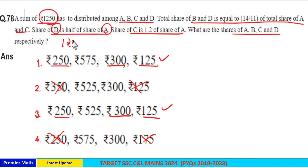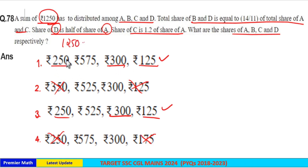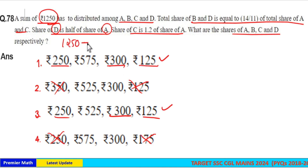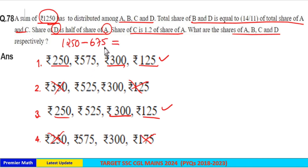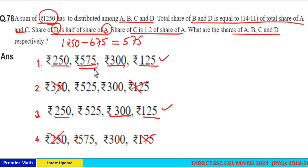Since the sum of a, b, c, d is 1250, the share of b equals 1250 minus the sum of a, c, and d, which is 250 plus 300 plus 125, giving 675. So 1250 minus 675 equals 575. The share of b is 575, and option 1 is your answer.